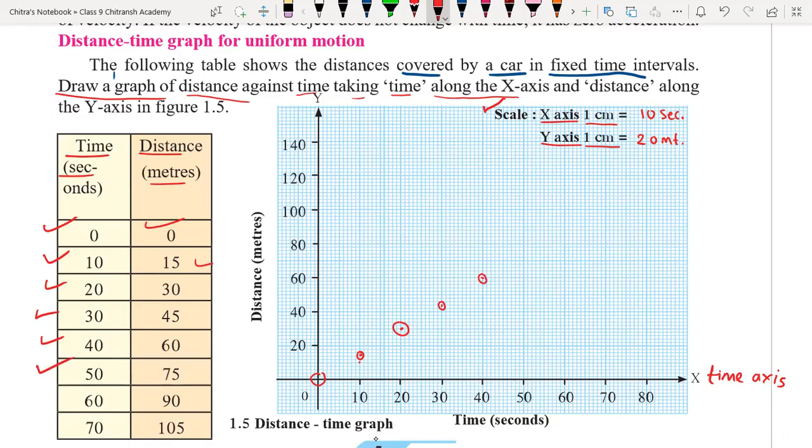Then we have 50 and 75. So 50 and 75, it is 70 and 75 will be here. Then we have 60 and 90. So 60 and 90 above 80 over here. Then last but not the least, we have 70 and 105. 70 and 100 and 5 will be over here.